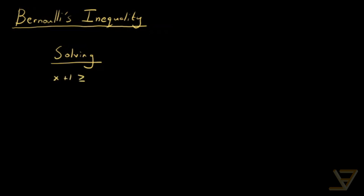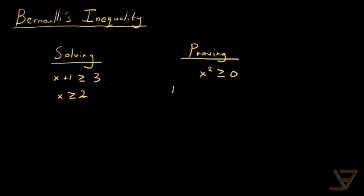The first kind of problem is the more well-known one, and it's about solving an inequality. An example is x plus one is greater than or equal to three, and we solve it to say that x is greater than or equal to two is all the solutions in the real numbers. The other kind of problem is about proving an inequality holds over a certain domain, and an example is x squared is greater than or equal to zero.